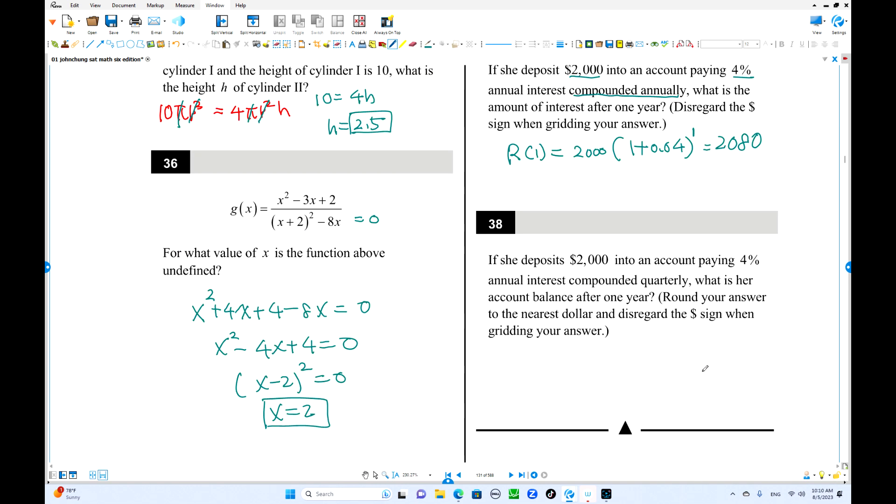Number 38. This time is compounded quarterly. So n equals 4. So the amount is what? 2,000 times 1 plus 0.04 over 4, but 4 times 1 is 4. That is quarterly compounded. So this equals 2,000 times 1 plus 0.01 to the 4. This one equals 2,081. How much difference? So that's the answer.